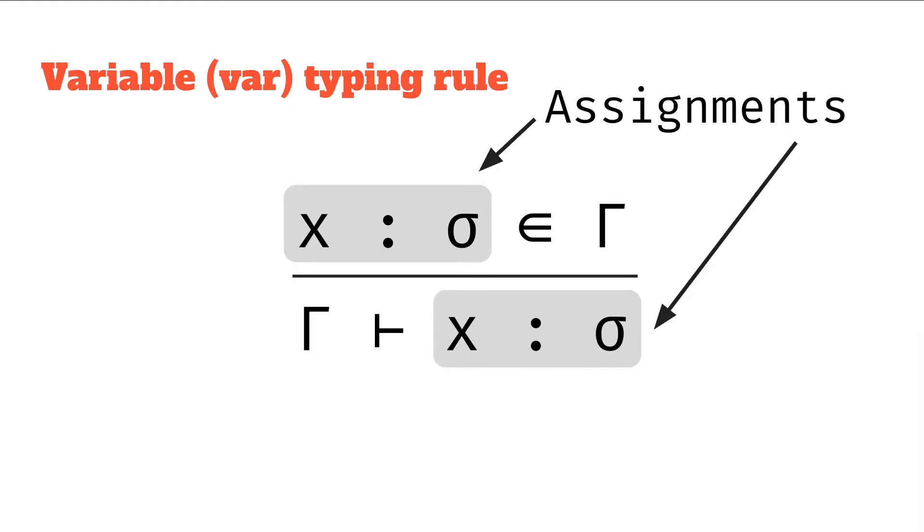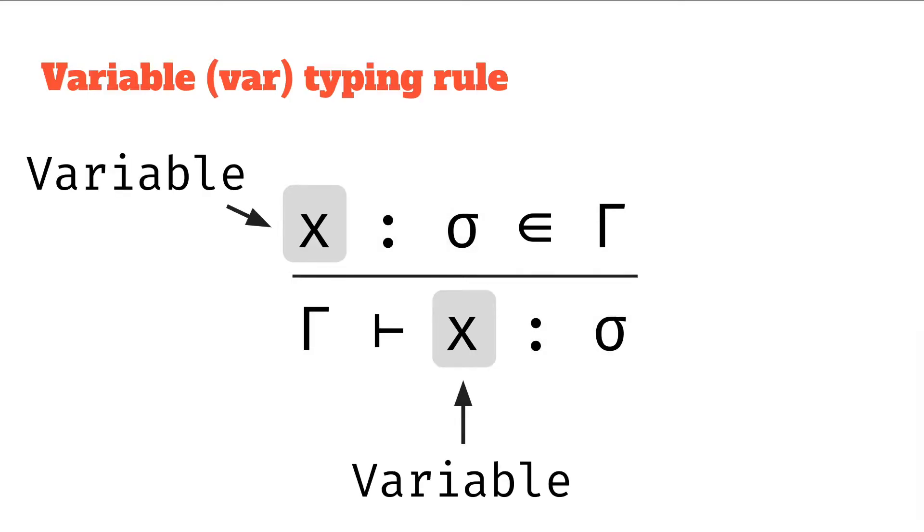So you can substitute this in for a different polytype, same with x, you're going to substitute it in for a different variable. We're saying x has type sigma in these assignments, and these are variables, and this is effectively what we're trying to find out the type of here. So if we have a variable, how do we find out its type? We use this typing rule.